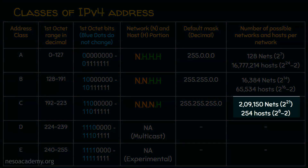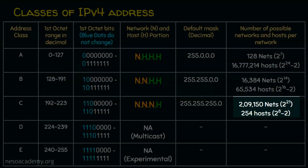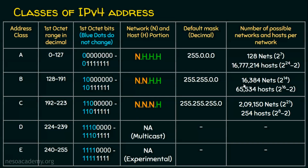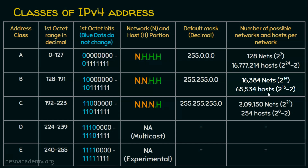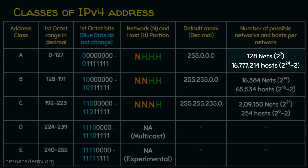In class C we have more networks, but each network has fewer hosts. In class B we have a moderate number of networks and a moderate number of hosts per network. And in class A we have fewer networks, but a huge number of hosts or IP addresses possible per network.